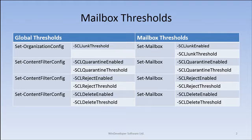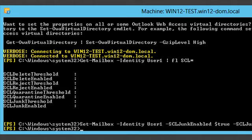The mailbox parameters can be set to null, so the enablement parameters can take one of three possible values: true, false, and null. True and false explicitly turn the threshold on and off, overriding the global setting. Null disables the mailbox override, allowing the global threshold to be applied. So if a user doesn't want the content filter to delete any emails,